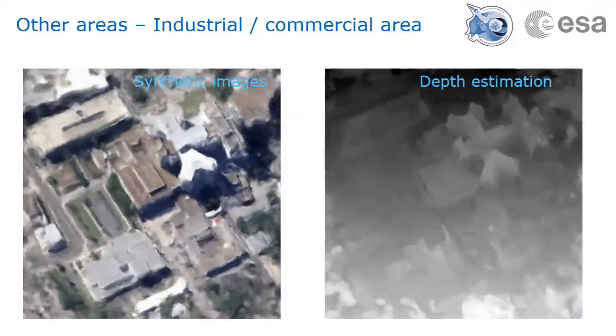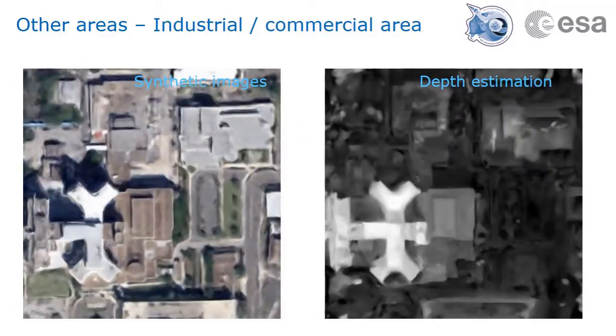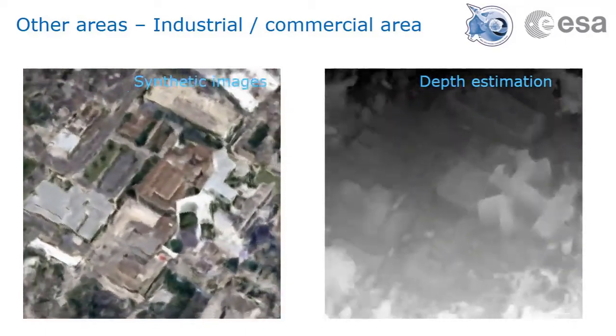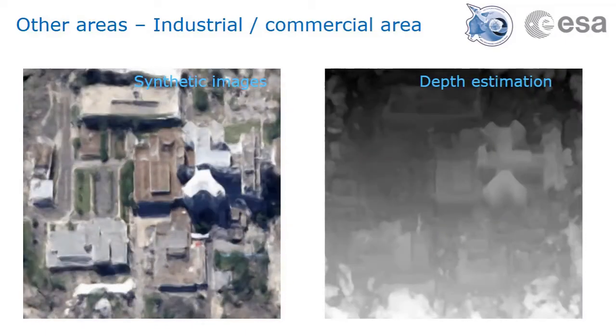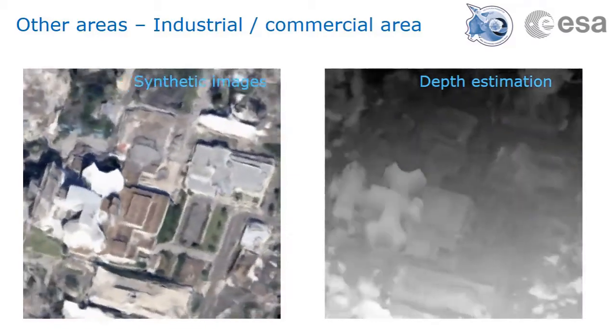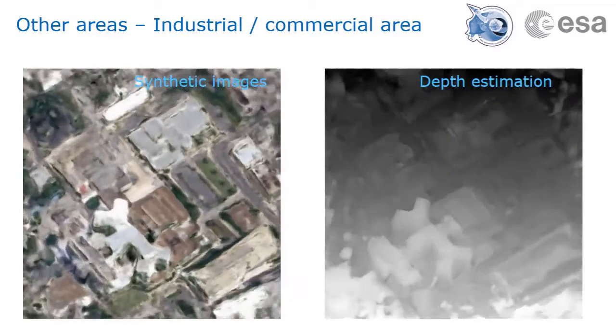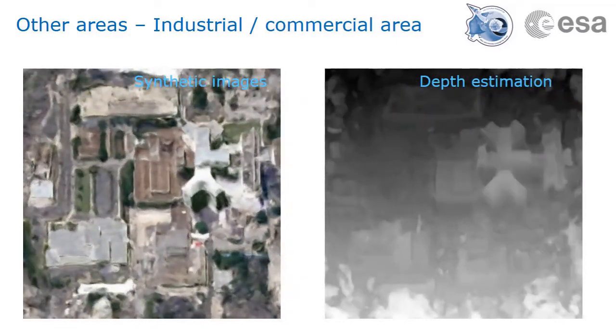This next example shows an industrial commercial area. Here, the shadow NeRF succeeds in restoring a majority of the scene elements, and provides a smooth interpolation between the different solar positions. Some artifacts still remain in the shape estimation, but these could be filtered out in post-processing.